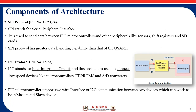The next serial communication protocol is SPI, which stands for Serial Peripheral Interface. In the PIC 18 microcontroller pin diagram it supports pin numbers 18, 23, and 24. SPI is active when the microcontroller fetches or receives information through sensors, shift registers, or SD cards. SPI has greater data handling capability compared to USART, because USART handles communication through a single cable whereas SPI handles communication through sensors, shift registers, and SD cards.